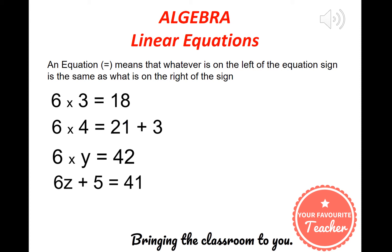Another form of that equation is 6z plus 5 is equal to 41. In other words, there's a value we need to find for z that would make that expression true.